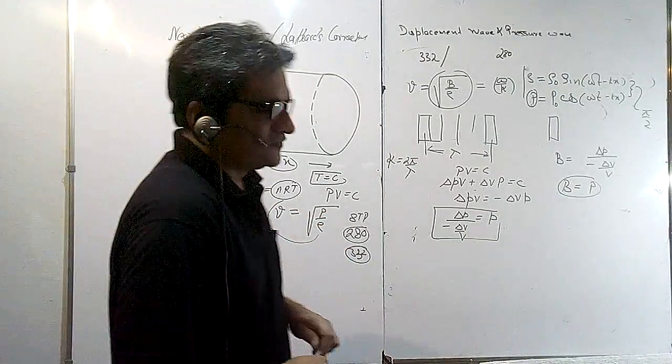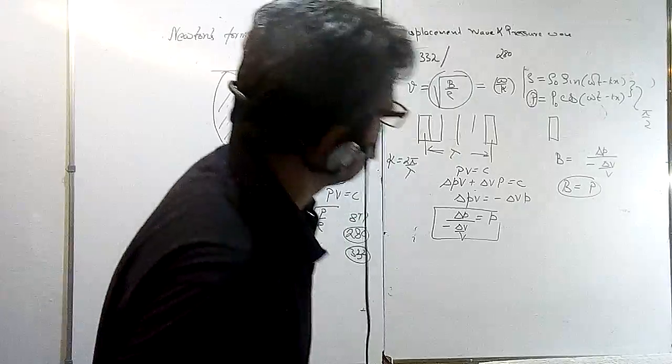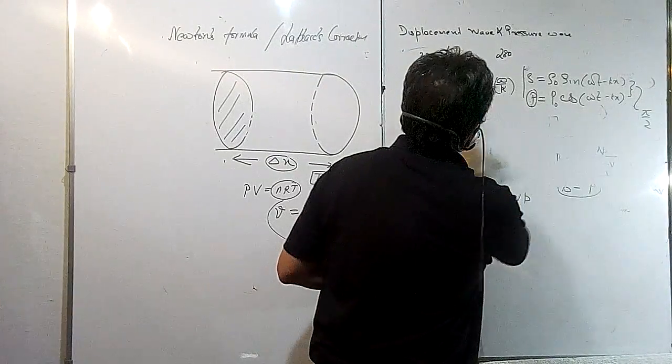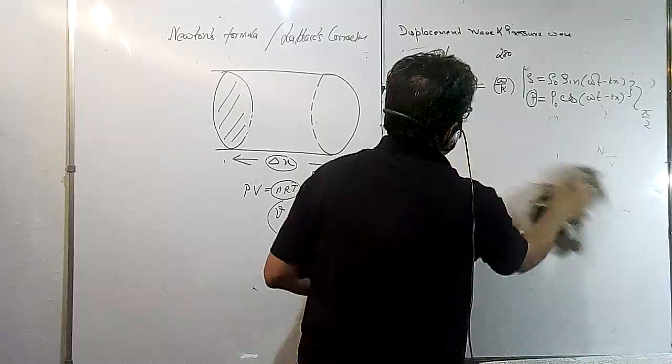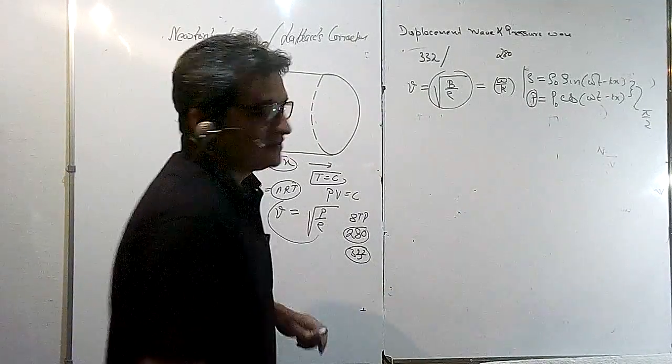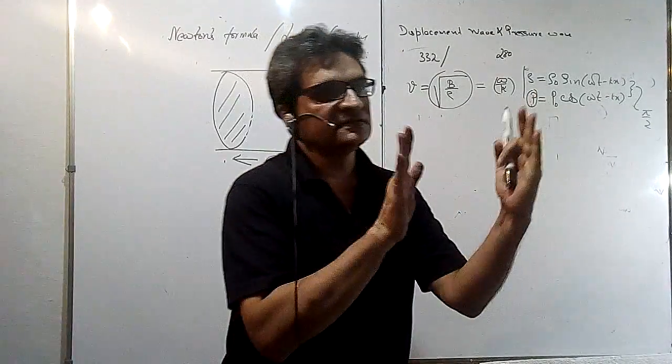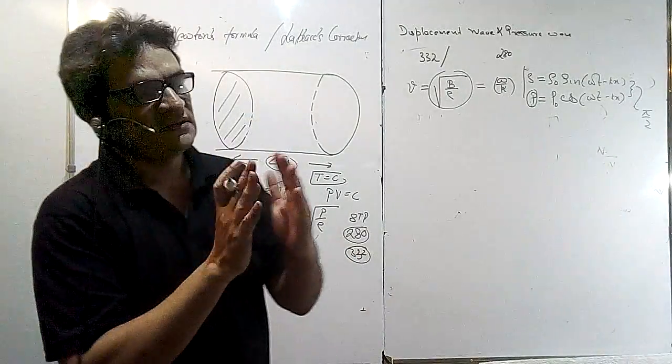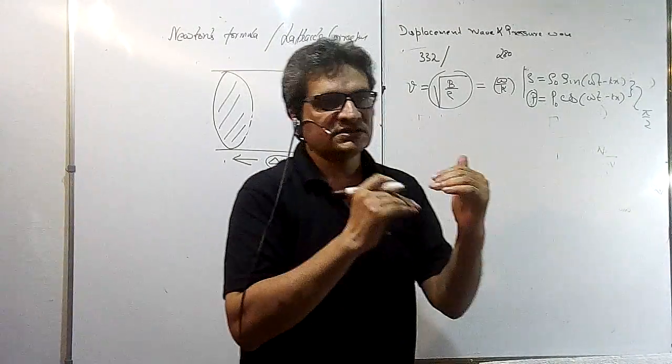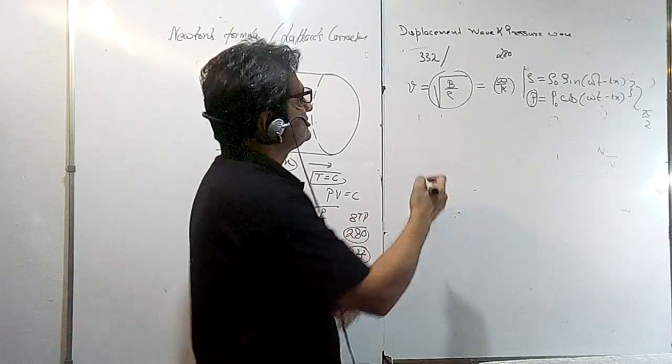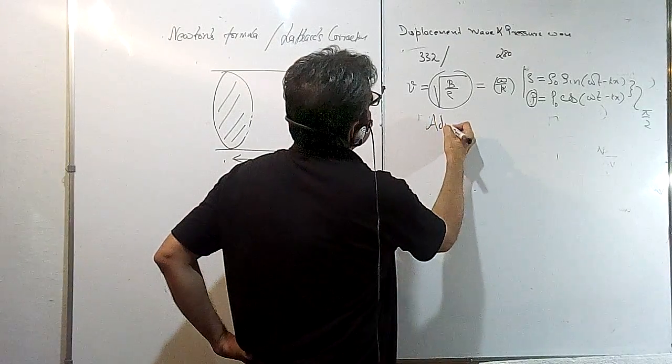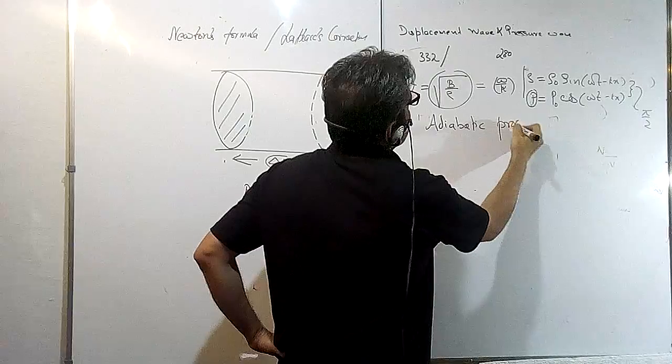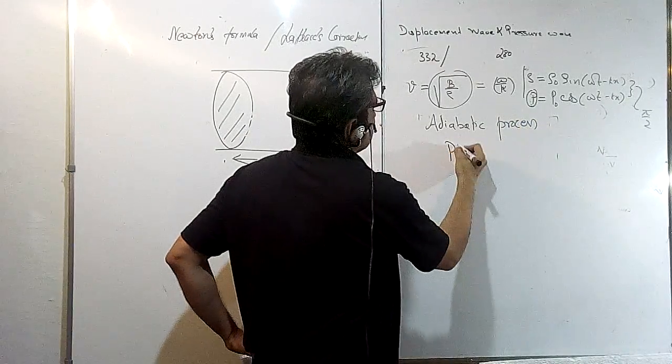So Laplace corrected it, and he suggested that the compression and rarefaction happen in such small intervals that this volume which we are dealing with doesn't get time to exchange heat with the surroundings, so it's an adiabatic process. And we know for adiabatic process, PV^γ is constant.